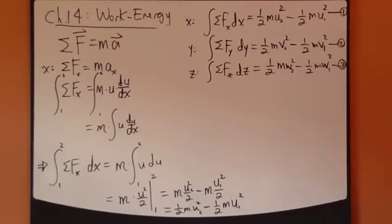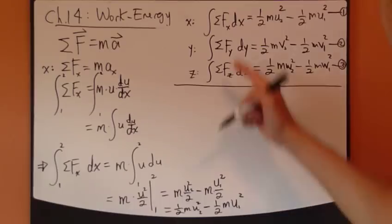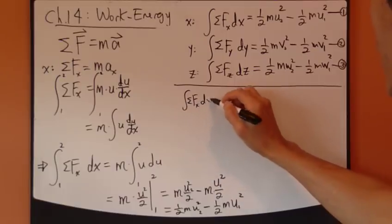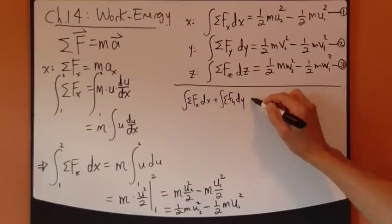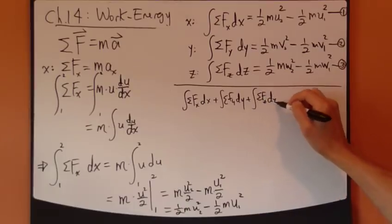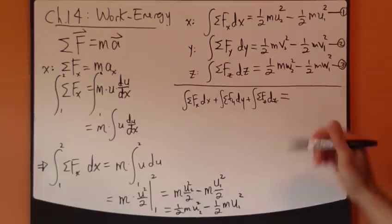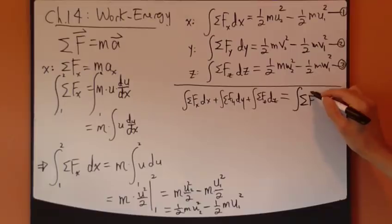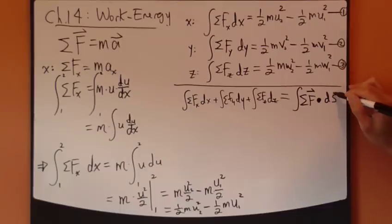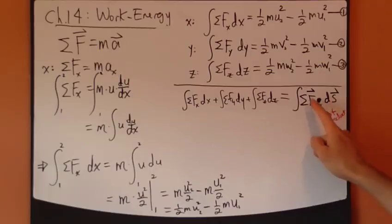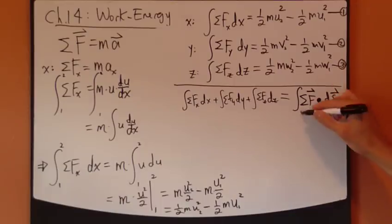Let's combine these three equations. First, let's recognize that sum of these three together: sum of Fx dx plus sum of Fy dy plus sum of Fz dz. Mathematically, this is shorthand notation. This is exactly sum of force vector dotted with the s vector. This is dot product. So, this force vector dotted with this position vector integrated from position one to two.